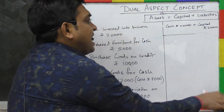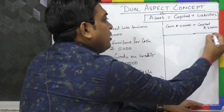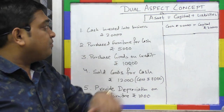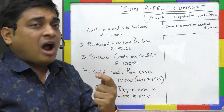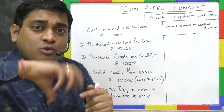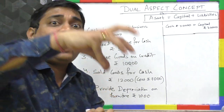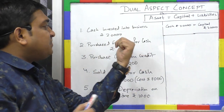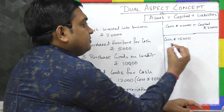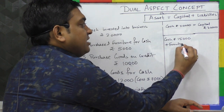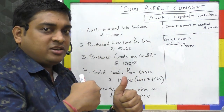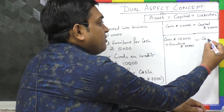For the next transaction, we add on to the existing equation. Transaction 2: Purchase furniture for cash rupees 5,000. Here, one resource is being used to purchase another resource. Cash decreases and furniture increases. So the new equation is: Cash ₹15,000 + Furniture ₹5,000 = Capital ₹20,000. The equation still holds good.